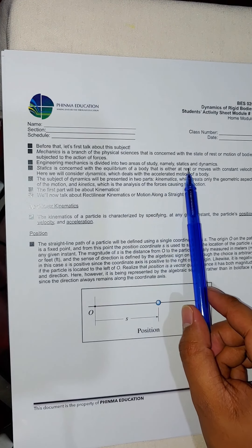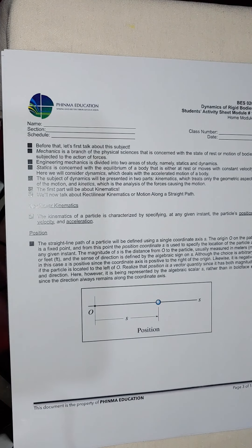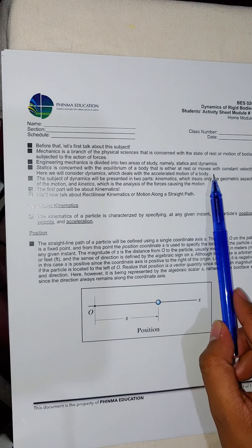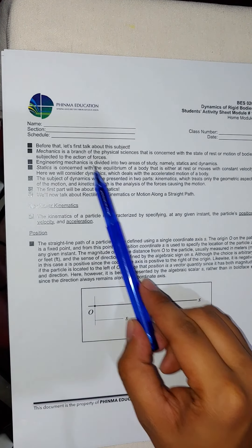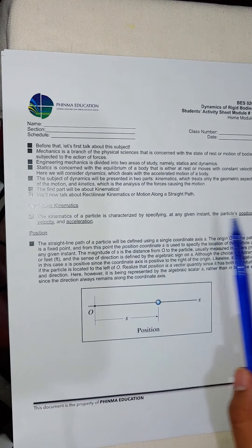Engineering mechanics is divided into two areas of study: statics and dynamics. Statics is concerned with the equilibrium of a body at rest or moving with constant velocity. Dynamics deals with the accelerated motion of a body. There is also a third part of engineering mechanics called the mechanics of deformable bodies.